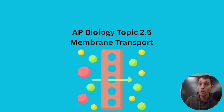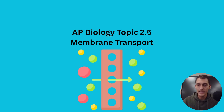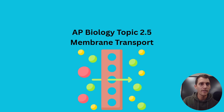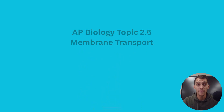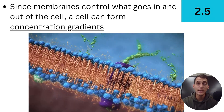We talked about how small non-polar molecules can freely pass through the bilayer, while large polar ones or charged molecules can't get through as easily. A cell can use its selectively permeable membrane to shape things in its internal and external environment, which can be really useful — and that's what we're going to find out about today. Since membranes control what goes in and out, a cell can form concentration gradients.